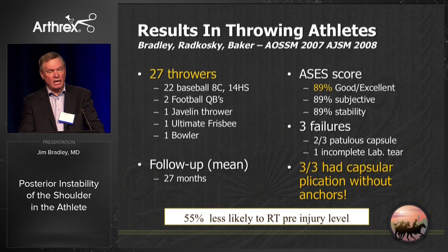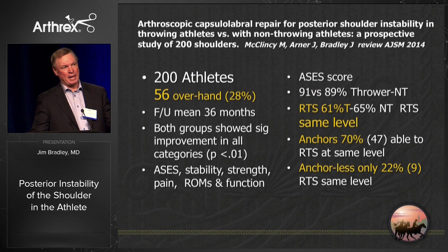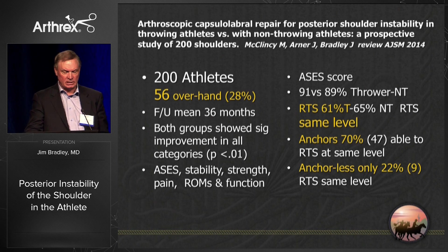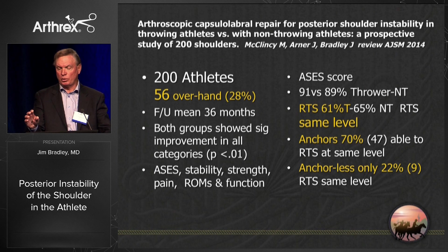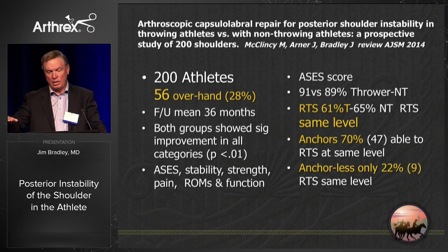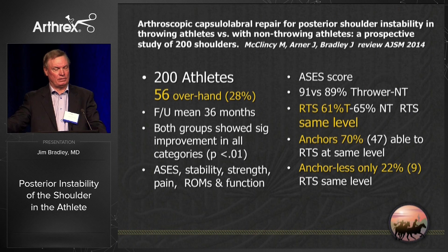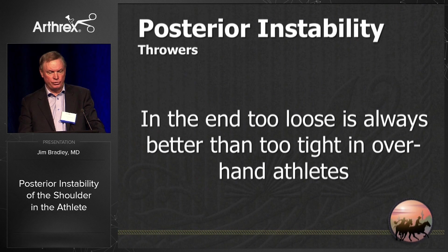The important findings: three out of three failures were with capsular plication without suture anchors, and 55% of those patients were less likely to return to their pre-injury level. Then of our 200 athletes, 56 were overhand athletes. Taking the whole group, return to sport was 61% at the same level. Of our non-throwers, 65% returned to the same level. But if we took the anchorless repairs out, 70% of the throwers went back to their pre-injury level. The point again: when in doubt, use suture anchors.